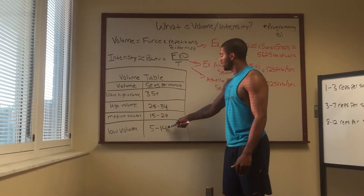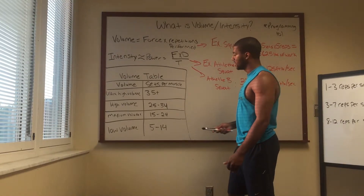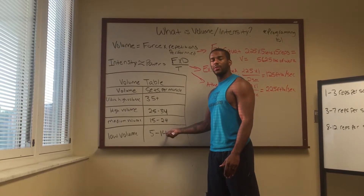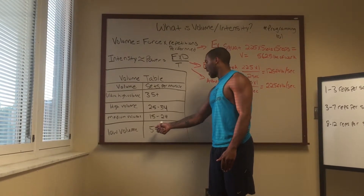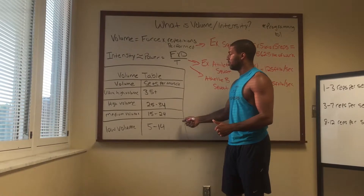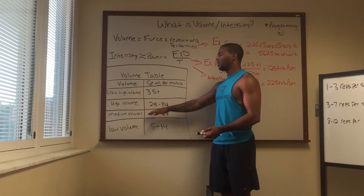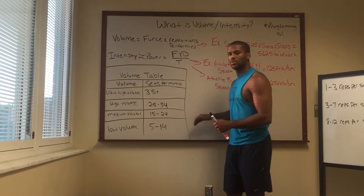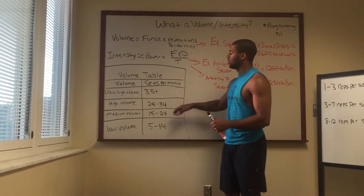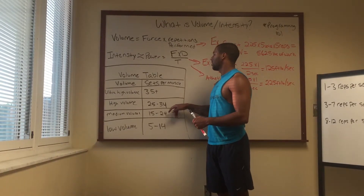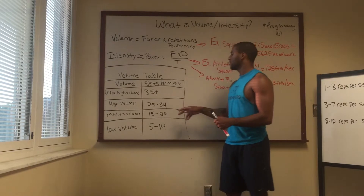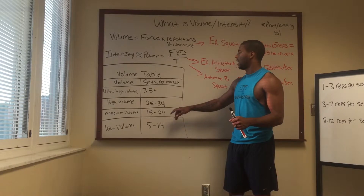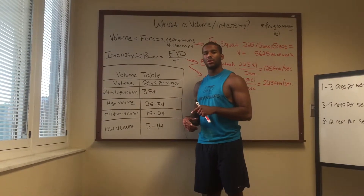The lower the volume, the higher the intensity can be. For example, if I go into the gym and want to hit a three-by-three — three sets of three — I can ramp up my intensity. But if I'm looking at doing ten sets, my intensity is going to be pretty low because I know I have more work to do. So higher volume and medium volume will correspond to a lower intensity compared to low volume. You can refer to Prilepin's chart to see where your percentages will lie.